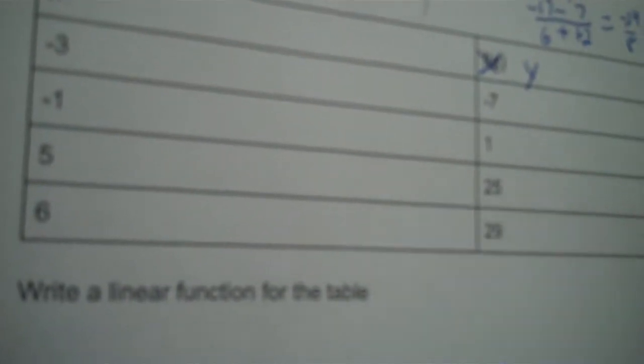Okay, next one. Table lists a function. Remember, f of x is just another thing for y, it's called function notation. Write it in linear notation by just putting y. We'll bring back the function notation at the end. When I input negative 3, it needs to lead to an output of negative 7. Input of negative 1 needs to lead to an output of positive 1. Input of 5 leads to an output of 25. Input of 6, output of 29.